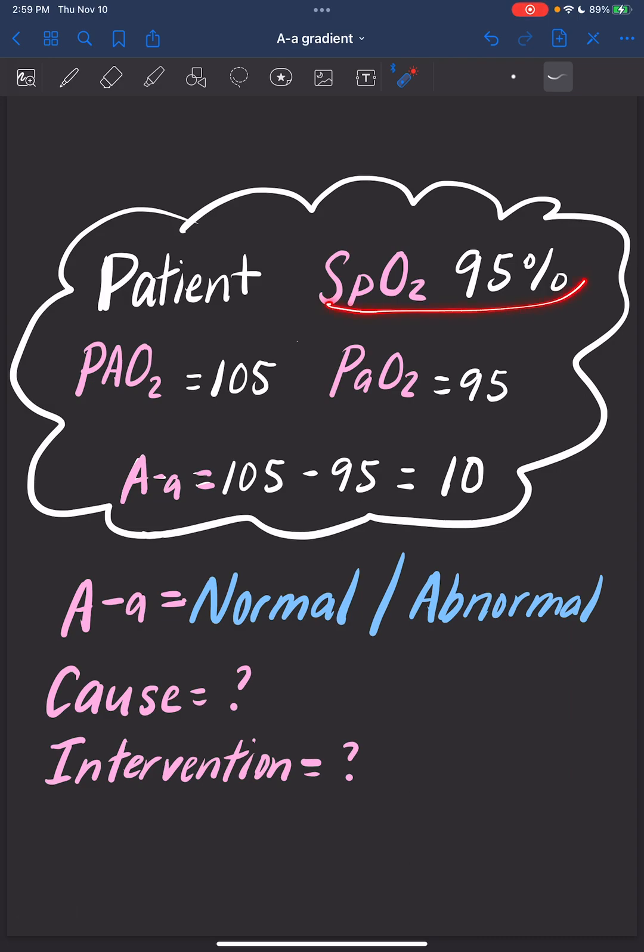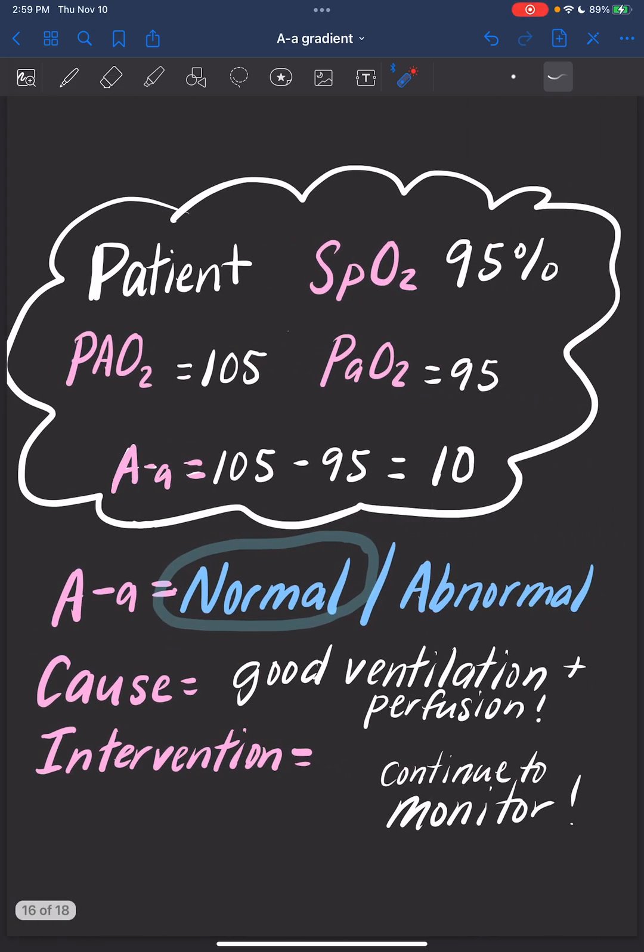Here's another one. Our patient's pulse ox says 95%. Alveolar oxygen is 105, and arterial oxygen is 95. Our A-a gradient is 10. Is this normal or abnormal? Do we need to do anything about this? You're right. It is normal, and we don't need to do anything. The patient looks like they're okay for now. Let's continue to monitor.